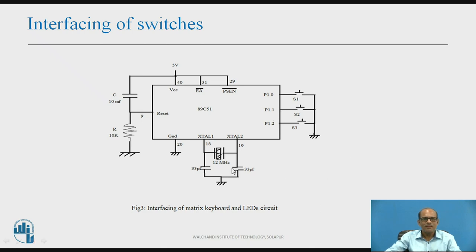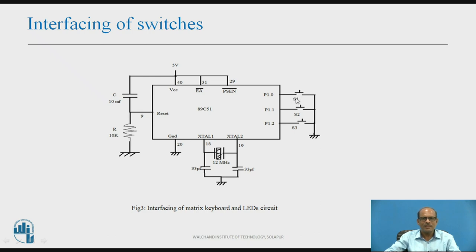For interfacing switches with the minimum system, switches S1, S2, and S3 are push-to-on switches connected to Port 1 lines P1.0, P1.1, and P1.2 as shown. By default when the microcontroller is reset, output at all lines is logic 1. When a push button is pressed, that port line gets connected to ground. In the program, we read P1.0: if we read logic 1, switch S1 is open; if we read logic 0, switch S1 is pressed.